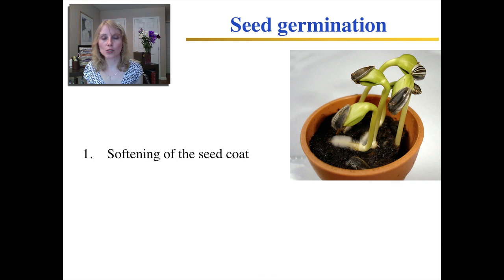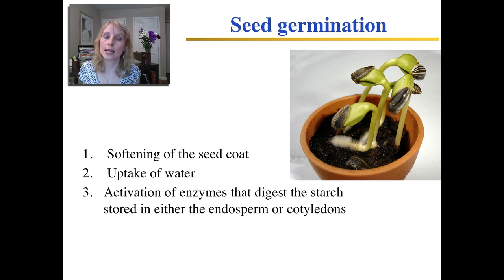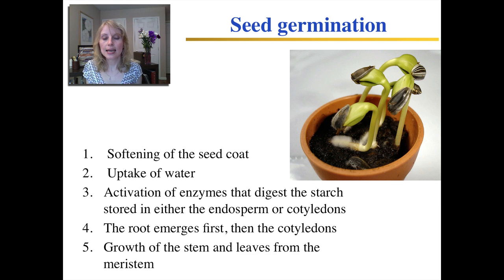Now let's look at what happens during seed germination. First, the seed coat softens and the seed takes in water, which activates enzymes that begin to digest the starch stored in the endosperm and cotyledons. That starch is digested so the plant has glucose available for cellular respiration, allowing it to divide and grow. Then the root emerges first, followed by the cotyledons, and eventually new stem and leaf growth occurs from the meristem tissue.